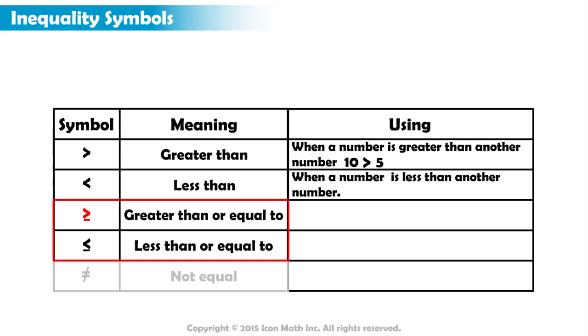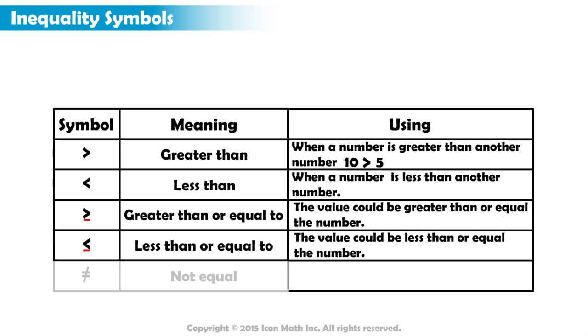Both greater than or equal to and less than or equal to have a line under the greater than or less than symbol. This line lets us know that the value could also equal the number.